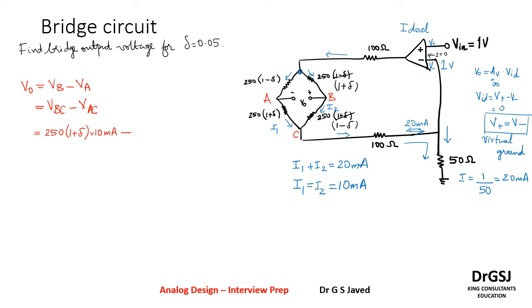Okay, just figured it out when I was solving the problem. Now so this value is given as V_BC is (1 minus delta) minus V_AC, that is 250 into (1 plus delta) times 10 milliampere, which is i1.